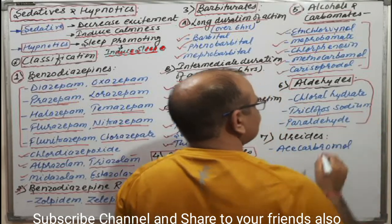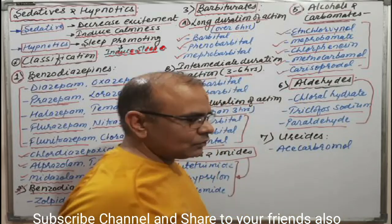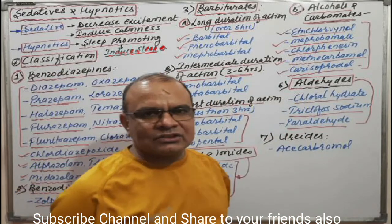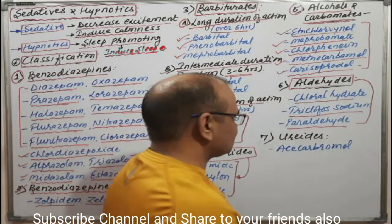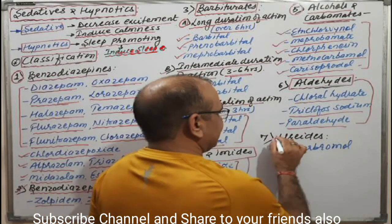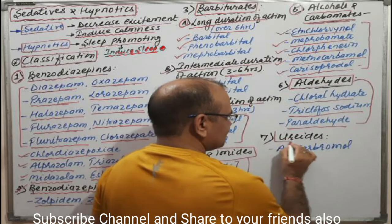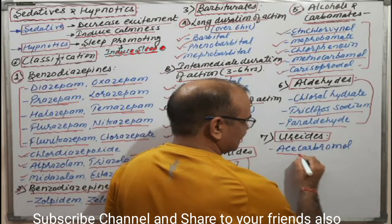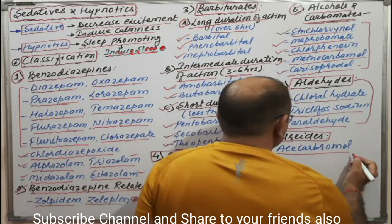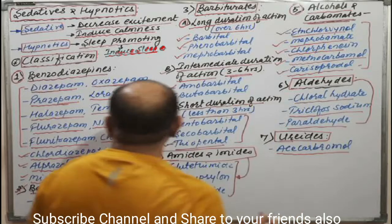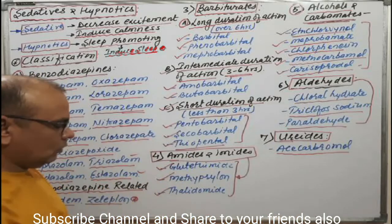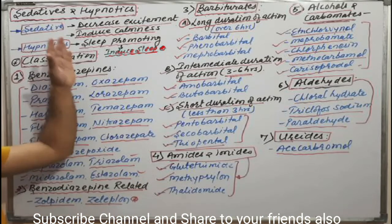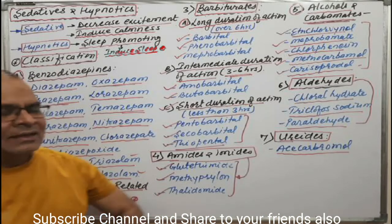The sixth category is aldehydes — these include chloral hydrate, triclofos sodium, and paraldehyde, which are derivatives of aldehyde. The seventh and last category is ureides, with sacarbamol as the example. All these categories belong to sedative hypnotics.